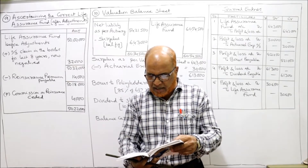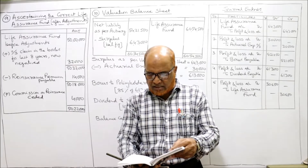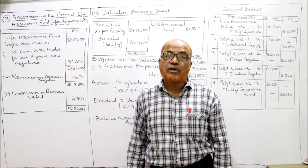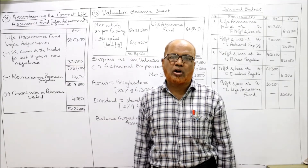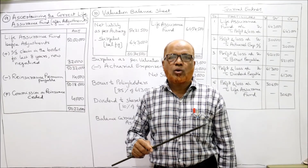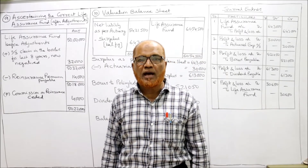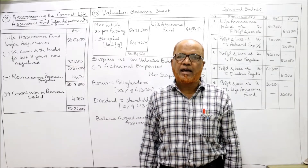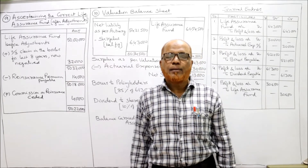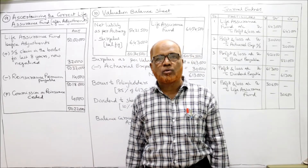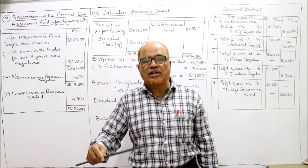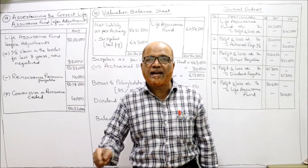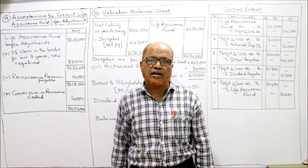Adjustment A: A claim of ₹32,000 outstanding in the books for 8 years is not to be honoured. One of the policyholders intimated to the company that his policy had matured and ₹32,000 was to be paid. The insurance company admitted the claim and it became an outstanding claim. But the person has not encashed that amount — up to 8 years completed, still that person is not coming. The company wants to negative that outstanding claim and remove it.